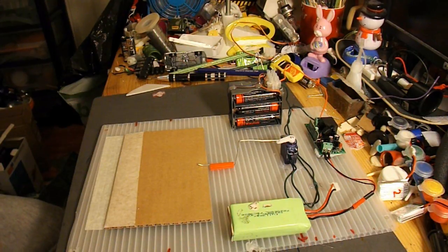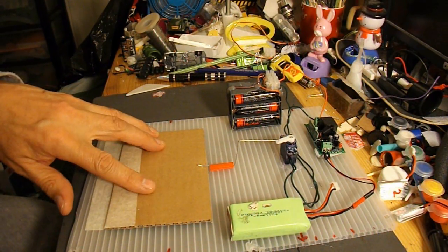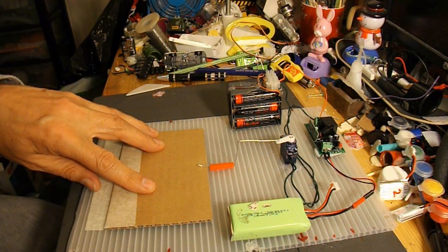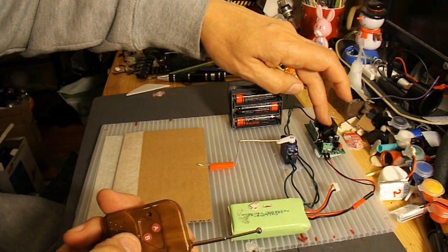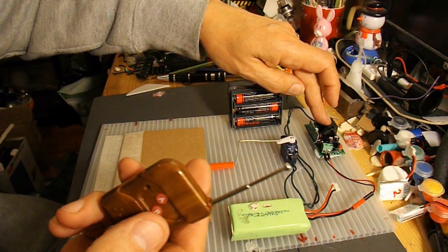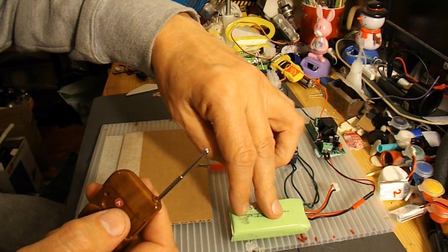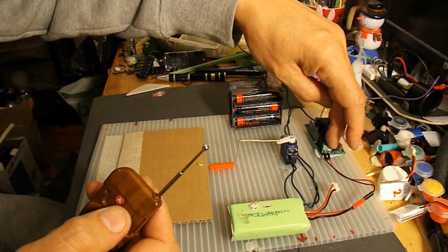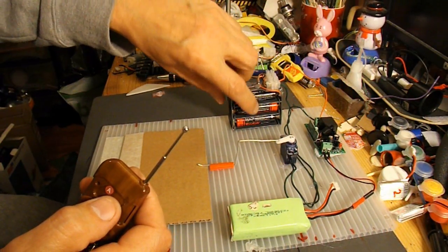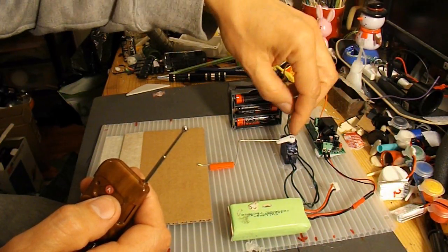There we are, all up together. So it's the same circuit as a couple of nights ago. We've got the single channel receiver and transmitter. I've got a LiPo battery actually feeding the power into the receiver. And then we've got three AA batteries there powering the servo.